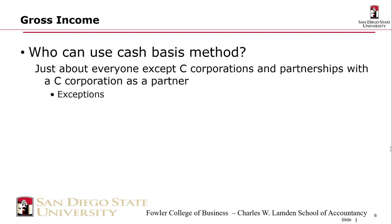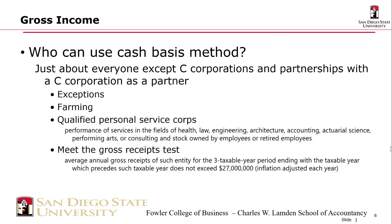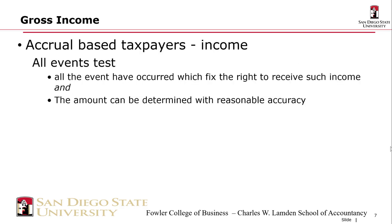Who can use the cash method? Just about everyone except the C-Corp and a partnership with a C-Corp as a partner, but there are exceptions: farming, qualified personal service corps, and since 2018, if you're defined as a small business — any entity whose gross receipts for the previous three years don't exceed $27 million for 2022 (inflation-adjusted from the original $25 million). That's gross receipts, not income. So your total revenue would need to be less than $27 million for the three-year period ending.